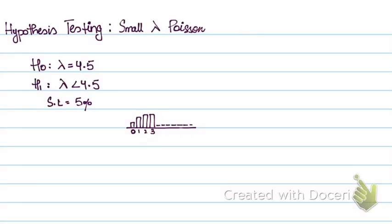So hypothesis testing for a small lambda Poisson. I have already written down an example. The null hypothesis is that lambda equals 4.5 and the alternative hypothesis is that lambda has decreased. We have to test at a significance level of 5% whether the claim is right or wrong.